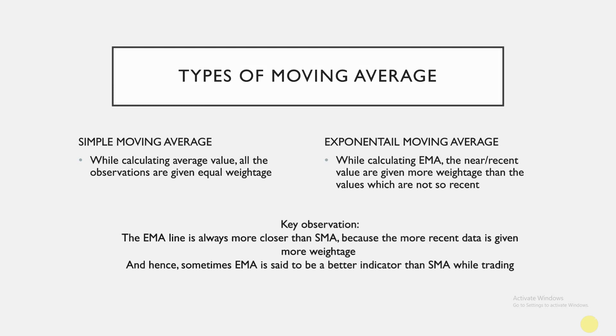A key observation is that the EMA line will be closer to the current price than the SMA line, because EMA gives more weightage to recent data. In SMA, all data are given equal importance, so the SMA line sits a bit further away. This is why traders and investors sometimes prefer EMA — they consider it a better indicator since values are more recent and closer to the current price.